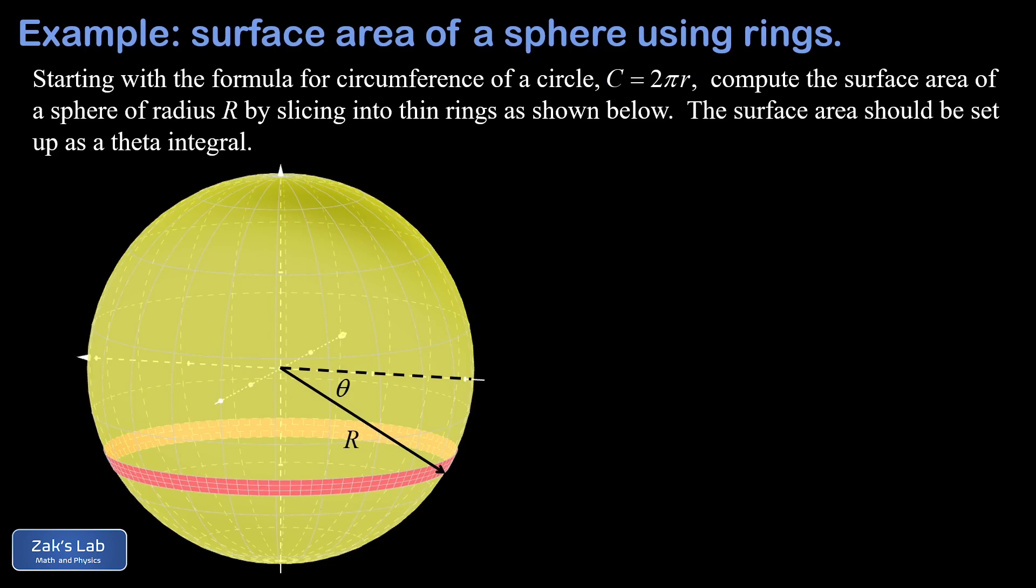The first thing to point out is that the radius of this ring is not big R. We already saw in the animation that the radius of the rings changes as you change the angle theta. We can visualize the radius of this particular ring, and we're going to call it little r. The radius of our particular ring is given by big R times the cosine of this angle theta, because that's the adjacent side of a right triangle.